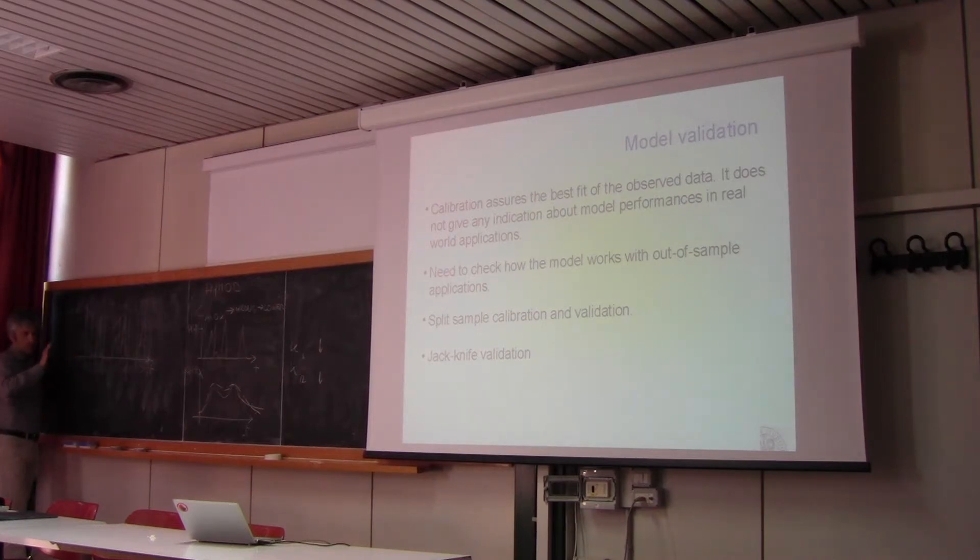So let me perform now a first validation by excluding one flood by chance. I perform the calibration of the whole series by excluding just one flood. So I'm not using half of the sample. I'm using almost all of the sample by excluding just one flood. And then I make the validation by reproducing that flood. And this is a first validation which is not very significant because it refers to just one flood.